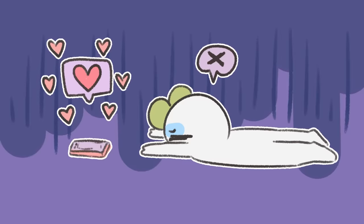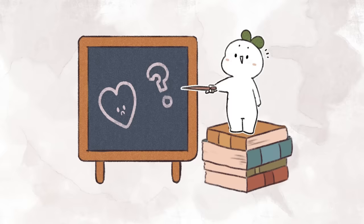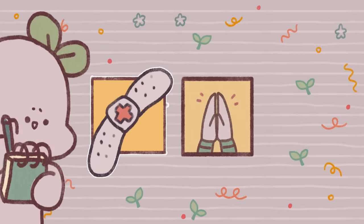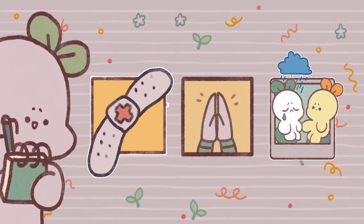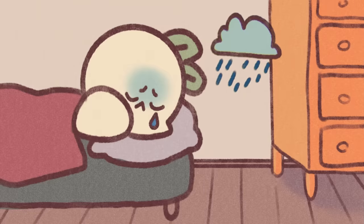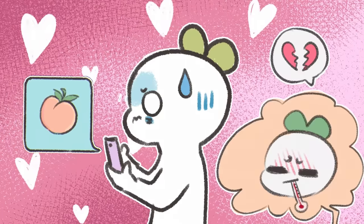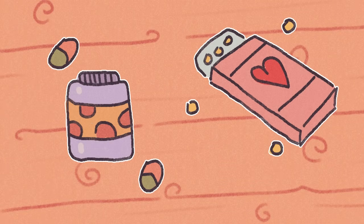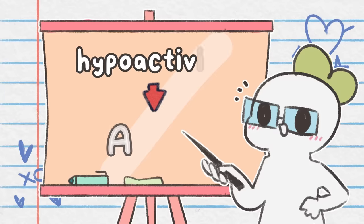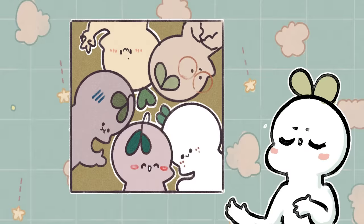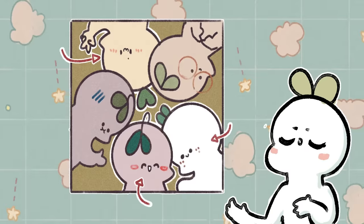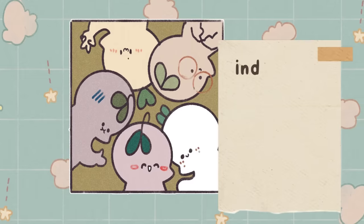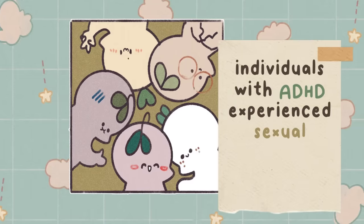These feelings can impede or hinder the engagement of sexual intimacy in a relationship. Various factors can lead someone to develop sexual aversion — for example, traumatic experiences, cultural or religious beliefs, and psychological issues. This condition is often seen in people with depression, but can sometimes arise as a side effect of medications such as antidepressants and heart medication, which usually reduce sex drive. Studies also found that individuals with ADHD experienced sexual aversion or hypoactivity, although incidences of sexual hyperactivity disorder were much greater.